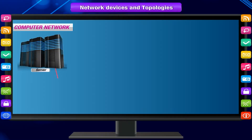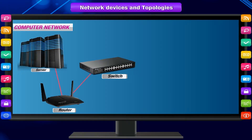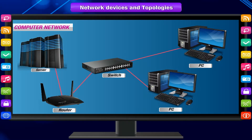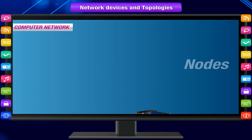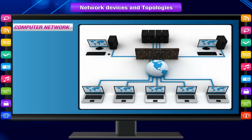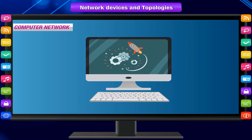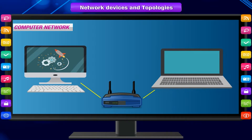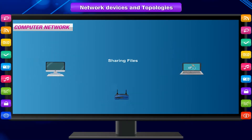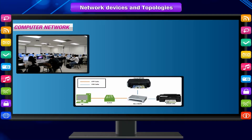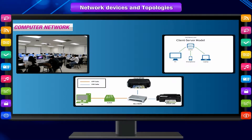A computer network is a group of two or more computers connected to each other electronically. Computers on a network are called nodes. A network is a multi-purpose connection which allows a single computer to do more. Connected computers can share resources like access to the internet, printers, file servers, and others.